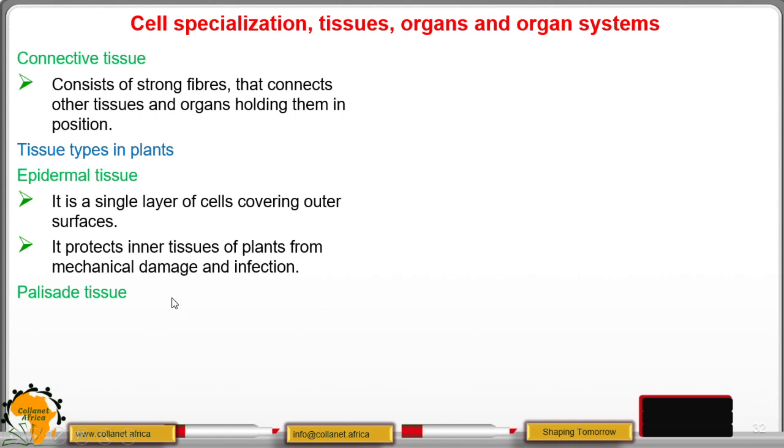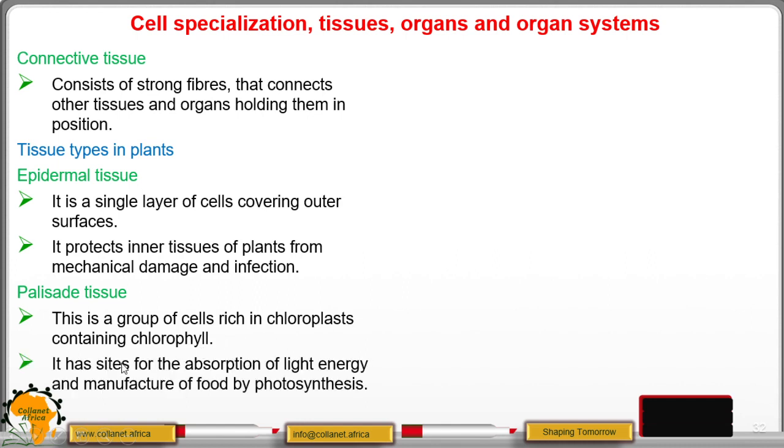We move to the palisade tissue and it is a group of cells rich in chloroplasts containing chlorophyll. It has sites for the absorption of light energy and manufacture of food by photosynthesis.